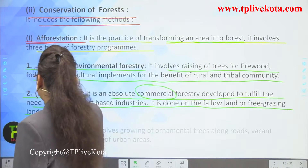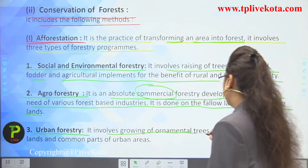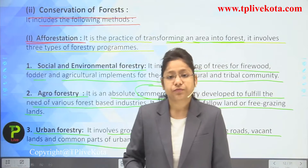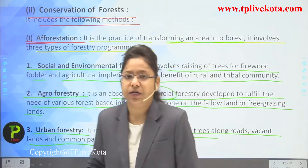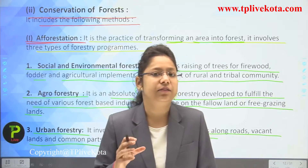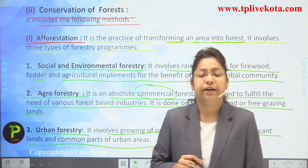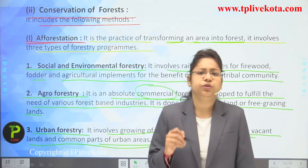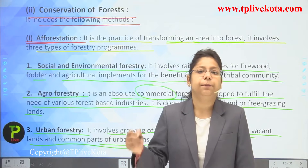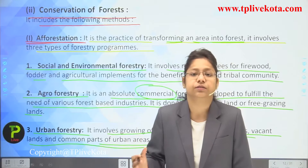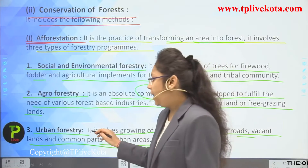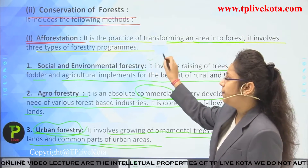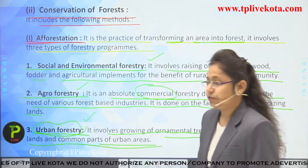The third type is urban forestry, which involves growing ornamental trees along roads, vacant lands, and common parts of urban areas. Ornamental trees have blooming flowers and good aromatic fragrance. In urban society, many flowers and hybrid plants are grown in homes as well. So the three forestry programs are: social and environmental forestry, agroforestry, and urban forestry — through which we can protect our forest from exploitation.